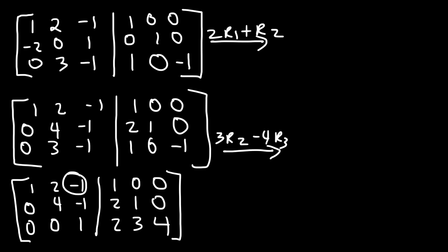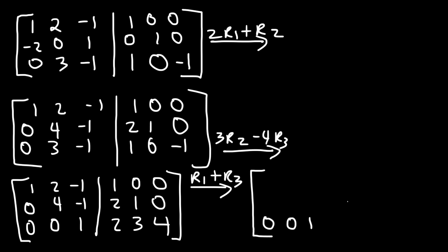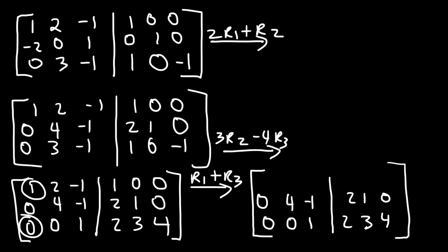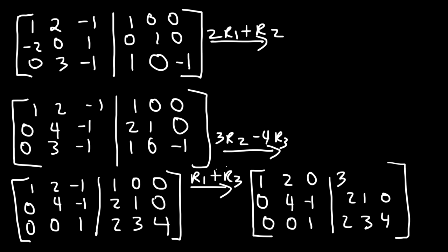Now what we need to do is turn this number into a 0. That's going to be straightforward — we just need to add row 1 and row 3. Let's rewrite rows 2 and 3. So it's going to be 1 plus 0, which is 1. Then 2 plus 0 is 2. Negative 1 plus 1 is 0. And then 1 plus 2 is 3. Then 0 plus 3 is 3. And 0 plus 4 is 4.